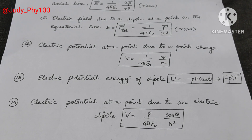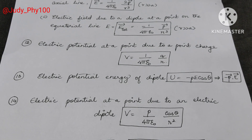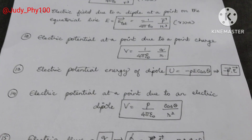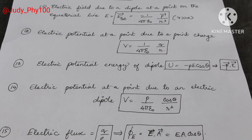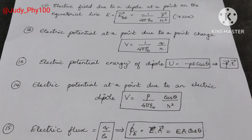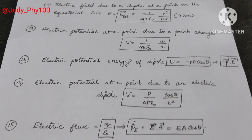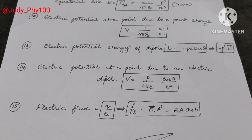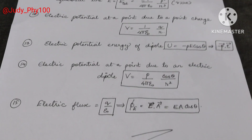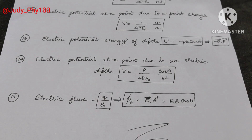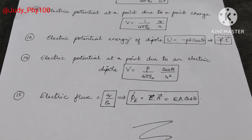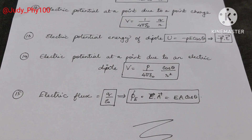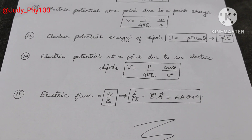Electric flux through a surface: phi is equal to vector E dot vector A, which is equal to EA cos theta.